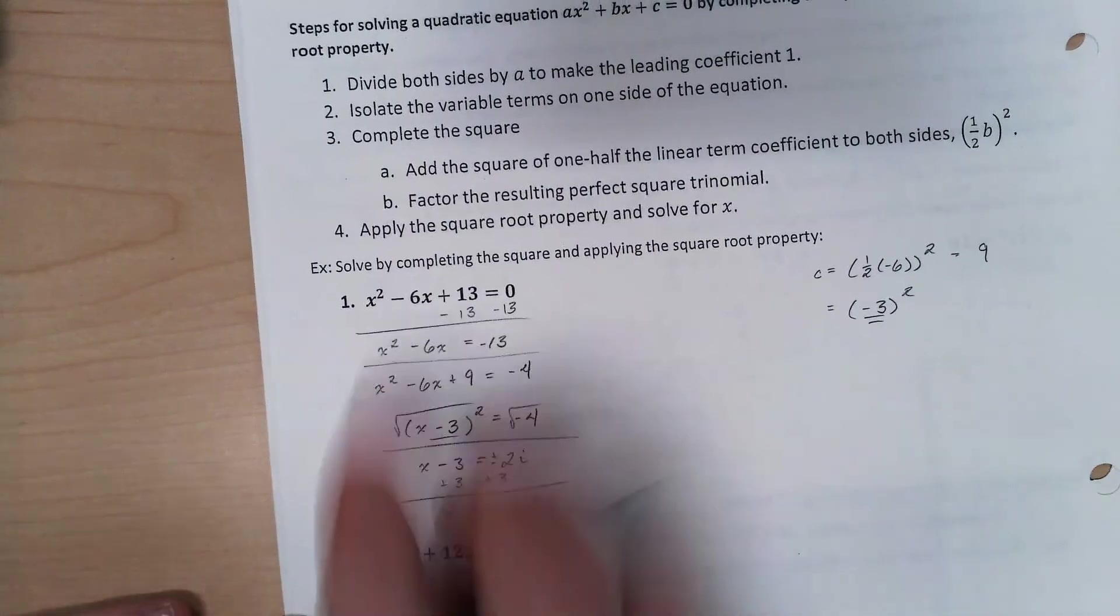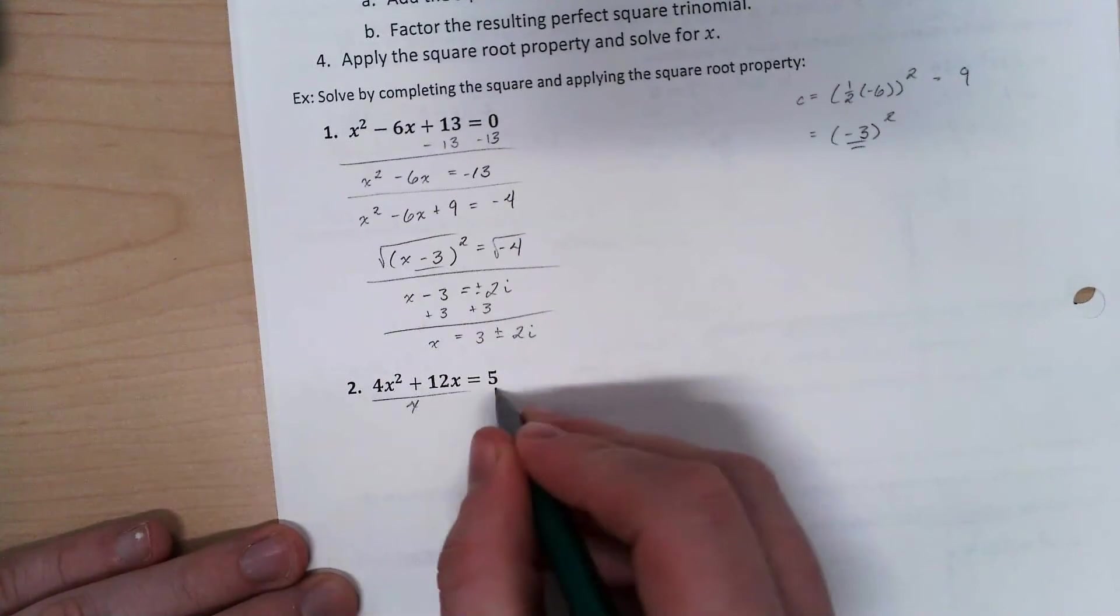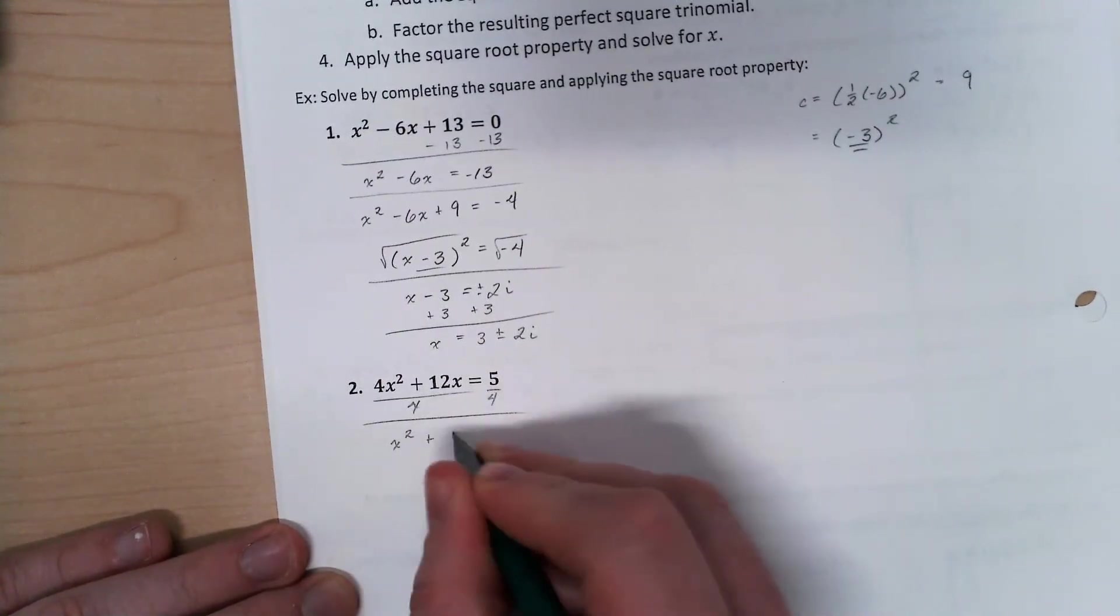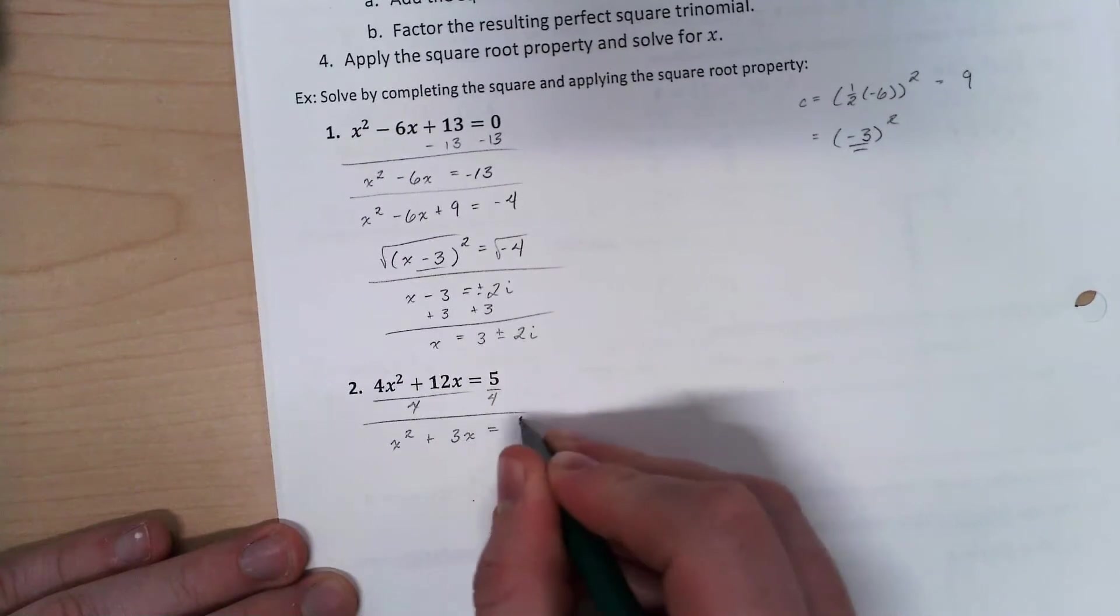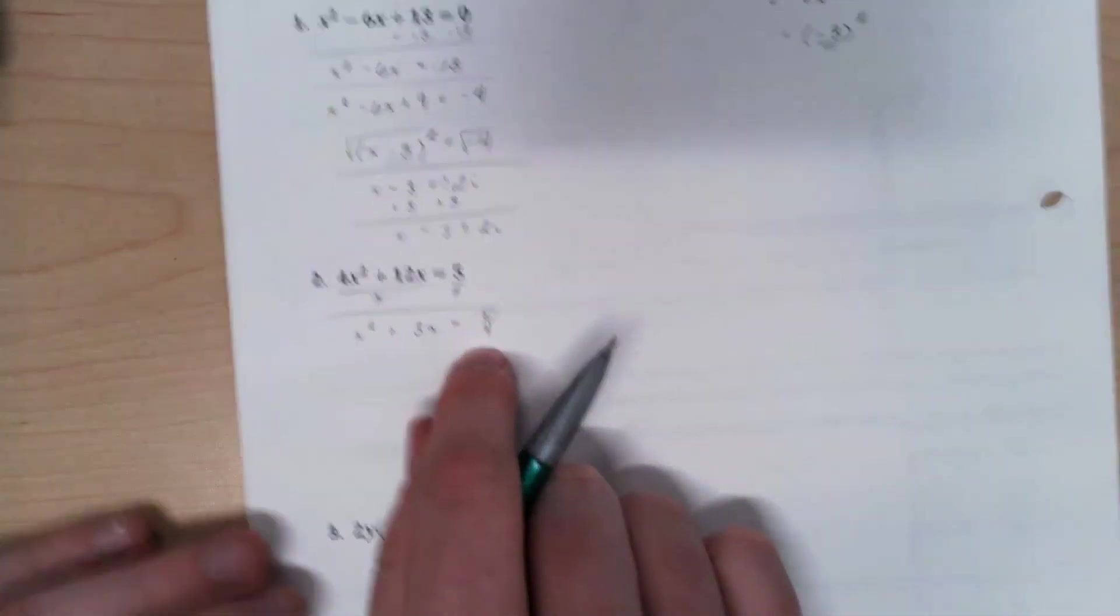Looking at our next one here. I need to divide both sides by 4. So if I divide my 4 over, I get that x squared plus 3x is 5 over 4. I'm fine with this fraction. It doesn't matter to me. That's one of the nice things about completing the square.